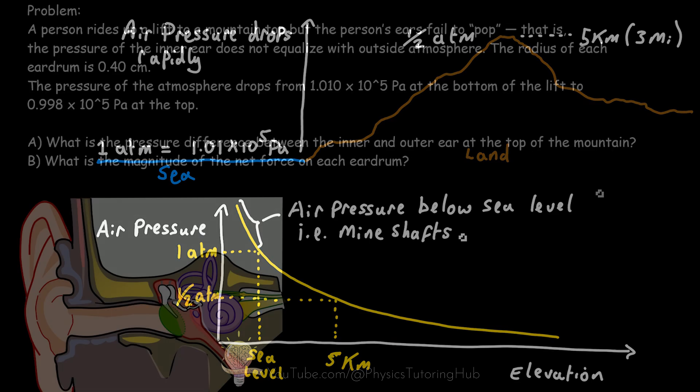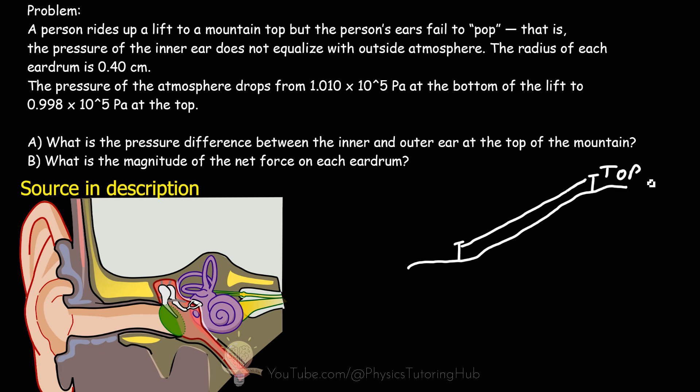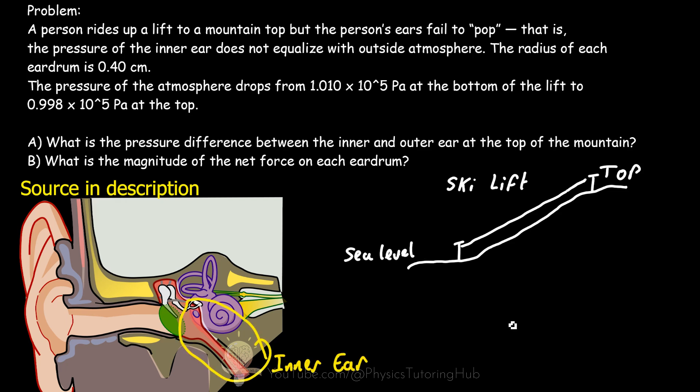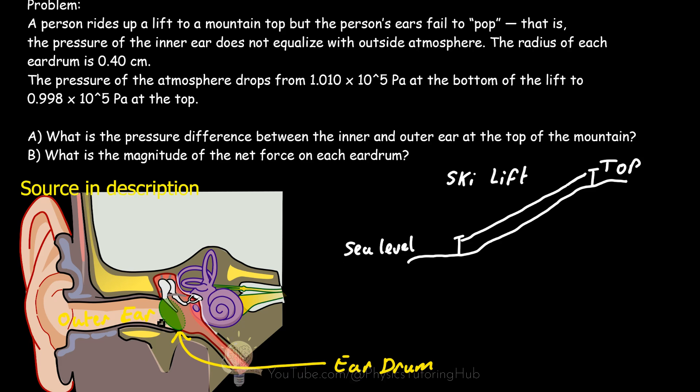Let's try another question. Imagine a person on a skiing trip riding a lift to a mountain top. As he goes up, his ears fail to pop — meaning the pressure of the inner ear is higher than the outside atmosphere, so there's a force acting on the eardrum pushing outwards. The radius of the eardrum is 0.40 centimeters. Atmospheric pressure drops from 1.010 times 10 to the 5 pascals at the bottom to 0.998 times 10 to the 5 pascals at the top. We want to find the pressure difference and the net force on the eardrum.